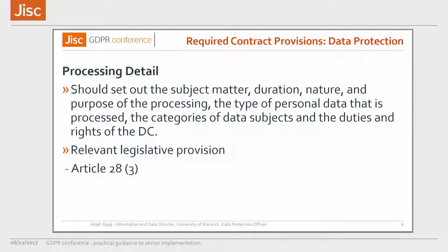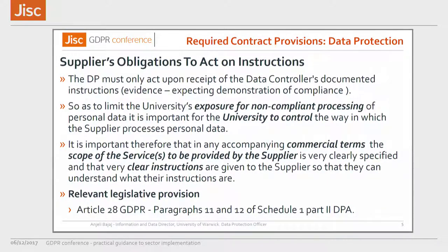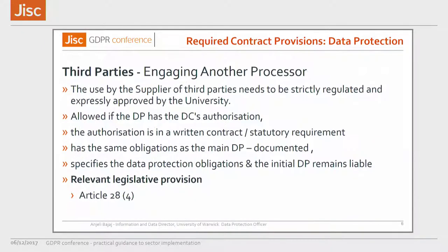The relevant legislative provision is Article 28.3. The next thing you have to specifically say under Article 28 is that the supplier is acting on your set of instructions — it's really, really important. Otherwise you're exposed as the university to non-compliant processing by the supplier. If there's a breach, the supplier will say they weren't given any instructions. So please be very careful, and do document your instructions. Your commercial terms should also specify the scope of the service being provided by the supplier in very clear instructions. The related provision is Article 28.3, and paragraphs 11 and 12 of Schedule 1 Part 2 of the DPA under current legislation.